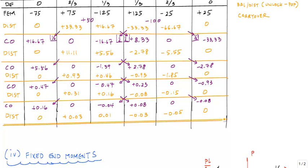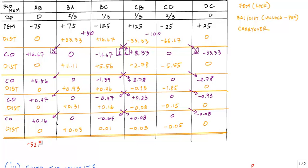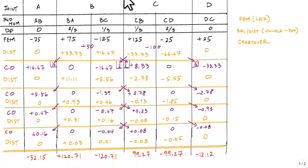And so now I'm ready to calculate or just sum up my columns so that I will have my end moments. Each of these totals, I'm just going to add up all the values in the column. My totals will be my moment at end AB is negative 52.15, at end BA it'll be 120.71 positive, and then negative 120.71. And if you did everything right, if you total up this joint right here, this should total to zero because these are the moments at the joint. This is 99.27, negative 99.27, and negative 12.12. So what we just did, all this was kind of like steps 4, 5, and 6 in this whole process to calculate these end moments at the bottom.